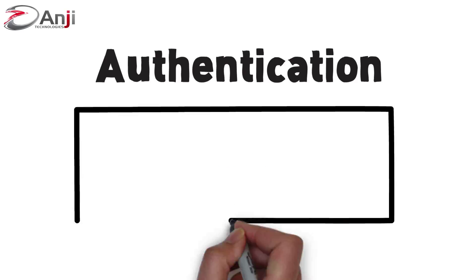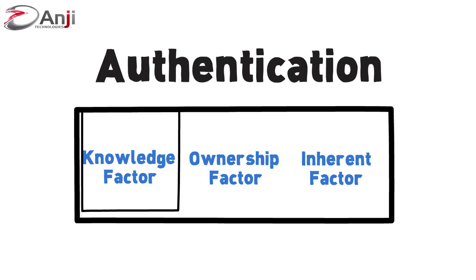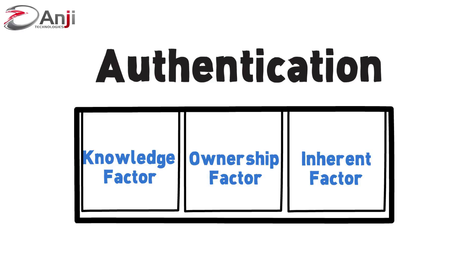Authenticate users through software and hardware with knowledge factor, ownership factor, and inherent factor. Knowledge factor is something the user knows, like a password or personal identification number. Ownership factor is something the user has, like an ID card or security token. Inherent factor is something that is part of the user, like a fingerprint or retinal pattern. Maintain multi-factor authentication where a user must use two or more factors to prove identity.